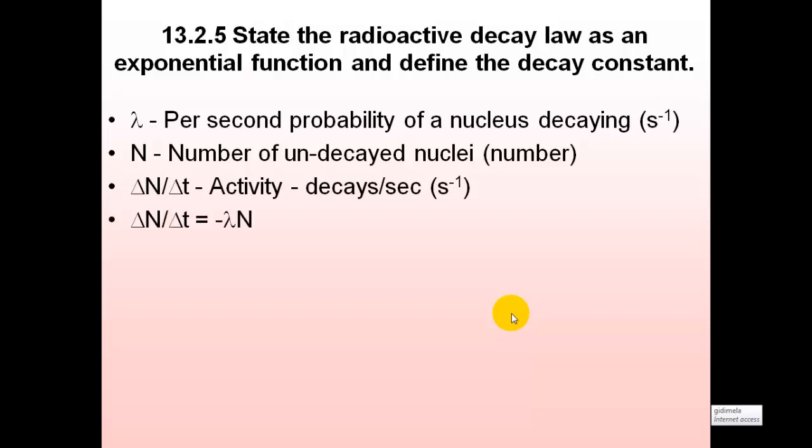This rate will depend on the number of nuclei present in the first place, and also on the likelihood — the probability — of any one nucleus decaying in a second. So Delta N divided by Delta T, which is the activity, is equal to negative Lambda N. The negative is because the number is going to reduce, as nuclei decay into other nuclei and the total number is reduced.